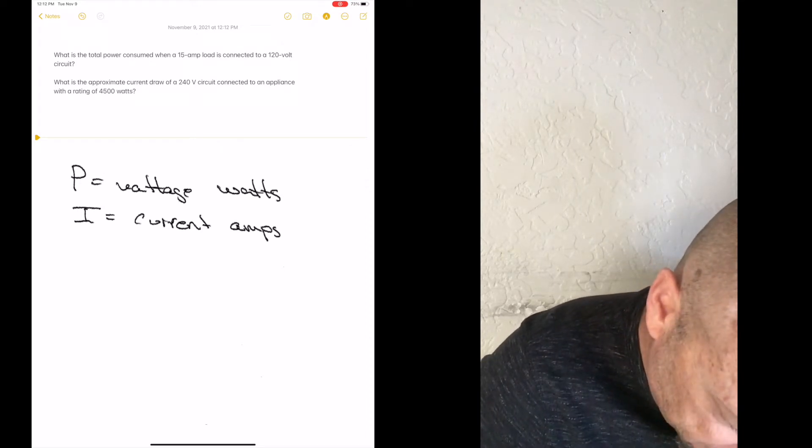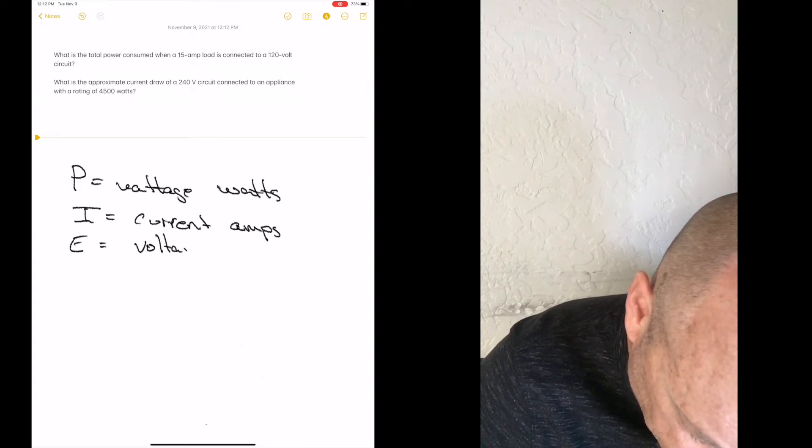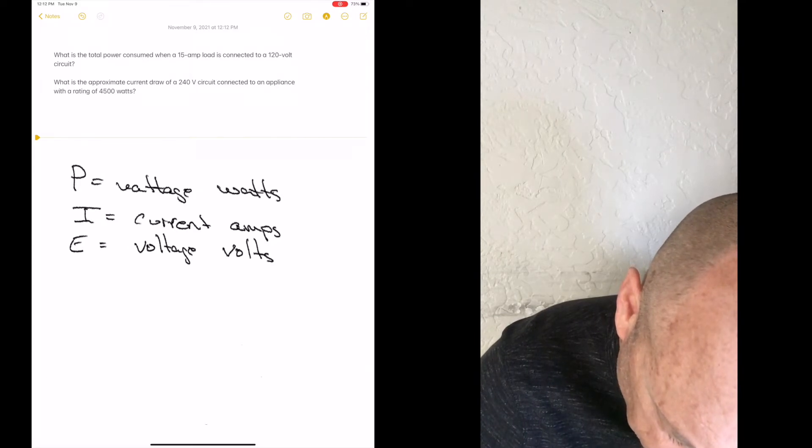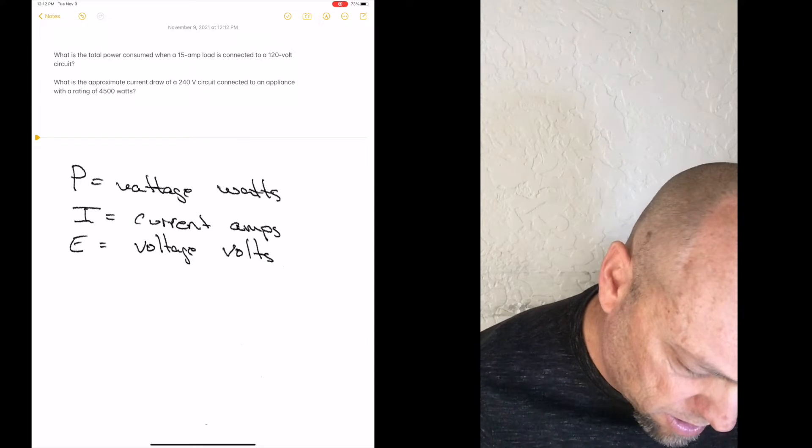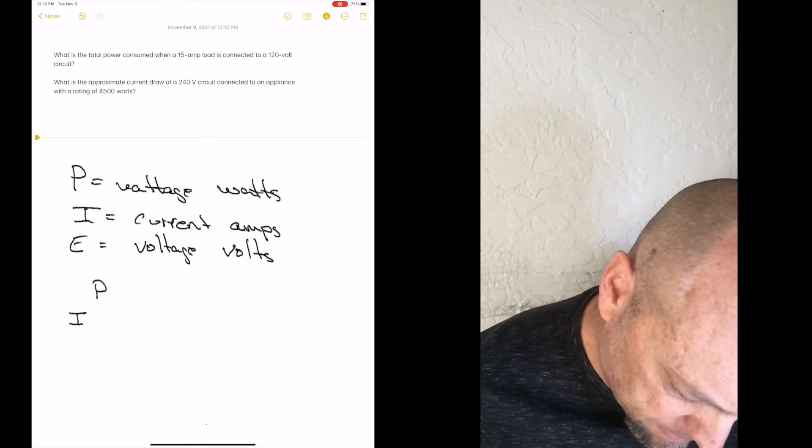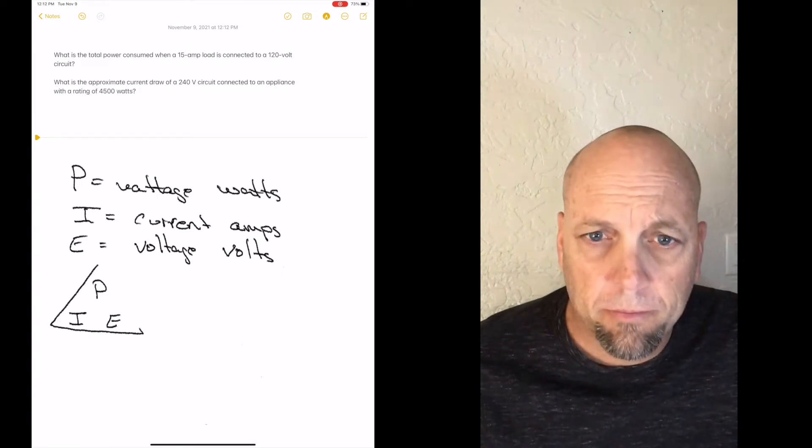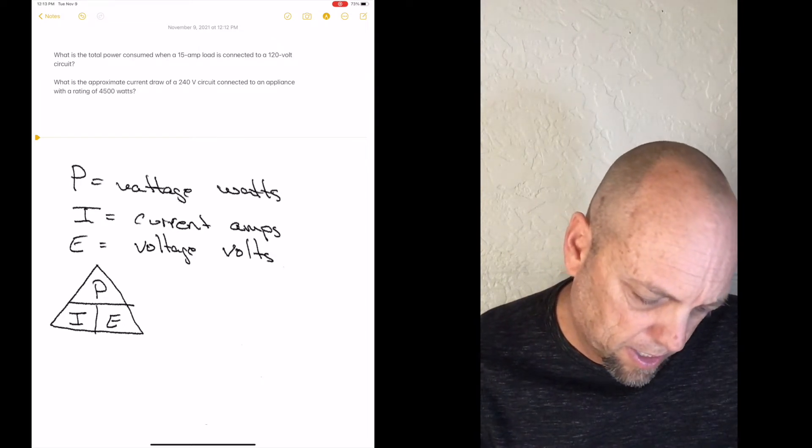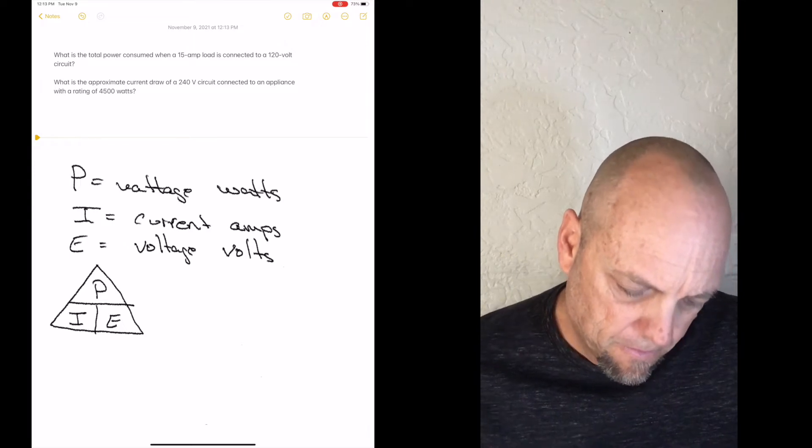and E which is voltage or volts. So with that, let's go ahead and build our triangle. P, I, E. Build that triangle just like that. And there you go.